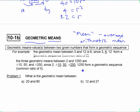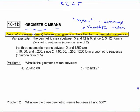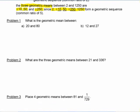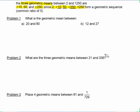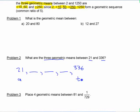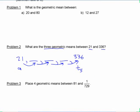Geometric means are values between two given numbers that form a geometric sequence. You can ask for more than one — for example, the three geometric means between 2 and 1250. Just write out the sequence with the unknowns: 2 is A, and 1250 is term 5. Fill in the formula and solve for r, then work out the terms.